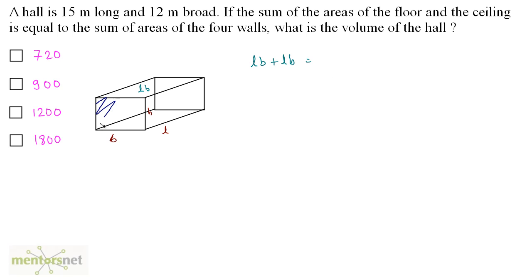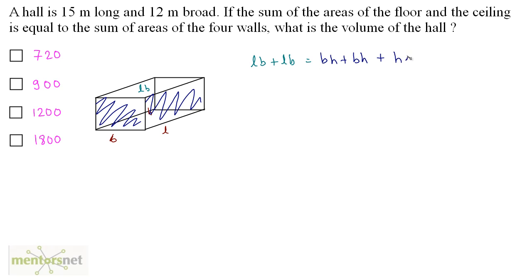We have this wall and the wall opposite to it. The area of this wall is B times H, and we have the opposite wall with the same area. So we have BH plus BH, plus this wall and the wall opposite to it. The area of this wall is L times H, so we have HL plus H times L.